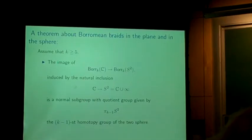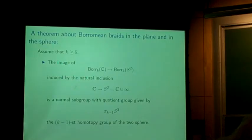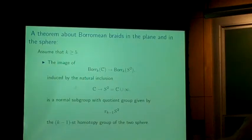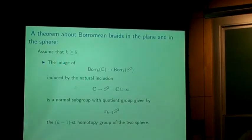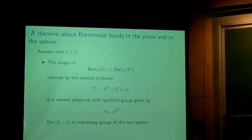Here is a theorem about the Borromean braid groups. Consider the natural inclusion and the image of the k-stranded Borromean braids for the complex numbers in the Borromean k-stranded braids for the Riemann sphere. That map is not an embedding — it is not one-to-one, but it is a map. The image of that map is a normal subgroup, and you can form the quotient group. The theorem is that that quotient group — Borromean k-stranded braids for the two-sphere modulo Borromean k-stranded braids for the line — is π_{k-1}(S²), the (k-1)-st homotopy group of the two-sphere, for k ≥ 5.